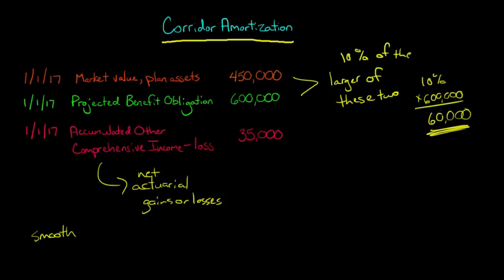However, when it gets outside this corridor, and in this case the corridor is $60,000. So if the amount in accumulated comprehensive income gets outside $60,000, then we're going to make the firm recognize the amount to the extent that it's above $60,000.